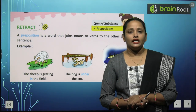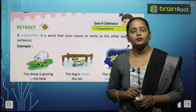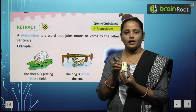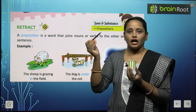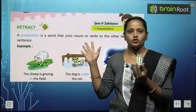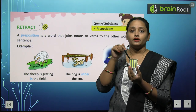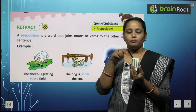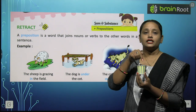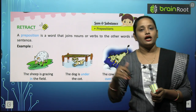Ab in teeno ka kya matlab hai? 'In' means kisi cheez ke andar. For example, children, here you can see I have this cup with me and I have a pen. Maine is pen ko cup ke andar dala — so the pen is in the cup. Toh pen cup ke andar hai. So 'in' means inside/under.